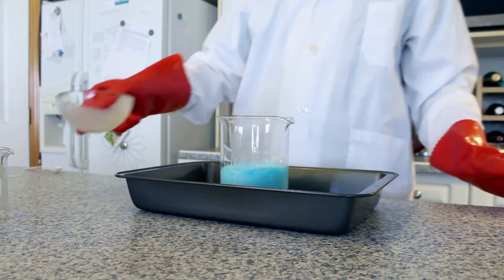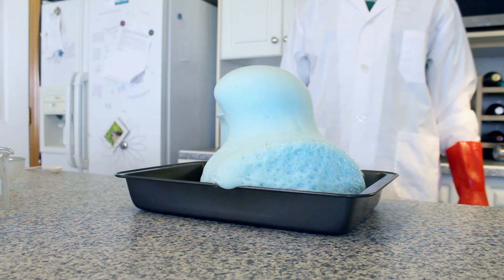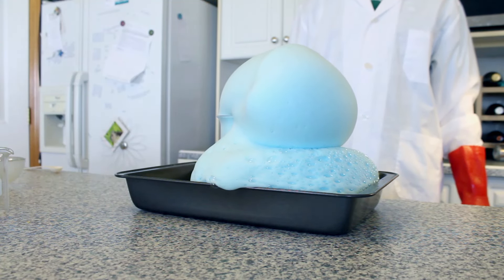The large number of escaping oxygen bubbles that are produced from the catalyzed breakdown of hydrogen peroxide become trapped in the dish soap, producing large amounts of hot foam, also known as elephant toothpaste.